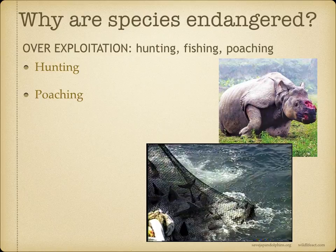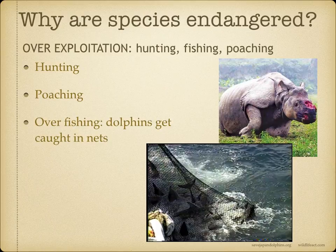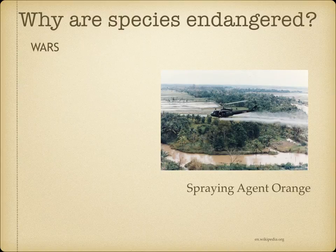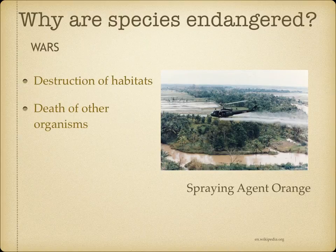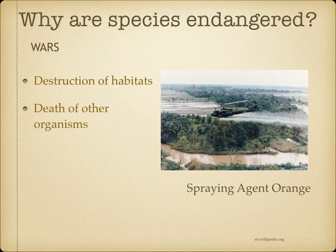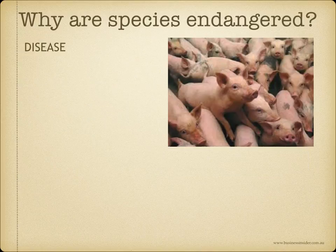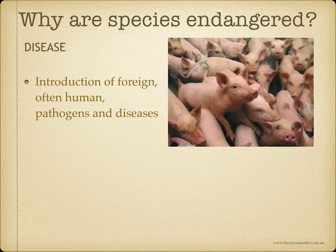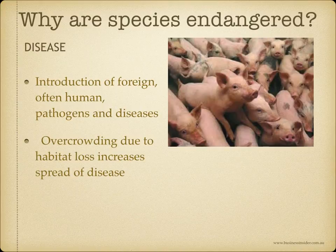Overfishing has led to incidental events — for example, dolphins getting caught in tuna nets. Wars have led to the destruction of habitats and the death of other organisms as well as humans. The use of Agent Orange in the 1960s destroyed forests and other wildlife. Regarding disease, the introduction of foreign, often human, pathogens and diseases, along with overcrowding due to habitat loss, increases the spread of disease.